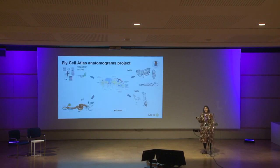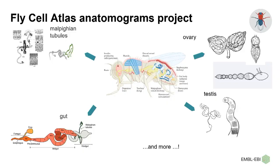Our next steps and aim for the Drosophila melanogaster community, in collaboration with the Fly Cell Atlas, is to develop these anatomograms for fly organism parts. We are currently actively developing anatomograms for the ovary and for the testes, but of course there are many other organism parts — for example, the mouth, the Malpighian tubules, and the gut — as part of the next steps for this collaboration.